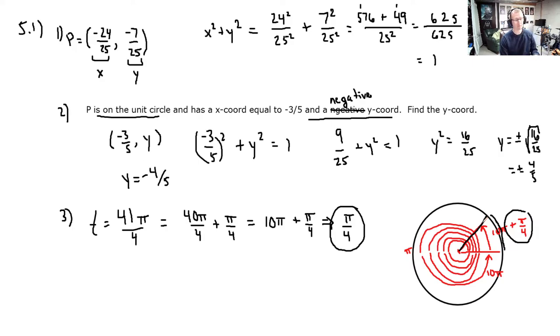So finding reference numbers or reference angles for things like this is something that we'll be doing. Finding co-terminal angles as well. We'll get into that. Actually we got into that in chapter 6 a little bit more. So that's it for section 5.1 questions. 5.2 questions I'll be back in just a minute, and that one might take a little bit of setup. So be right back with that. I hope that helped.